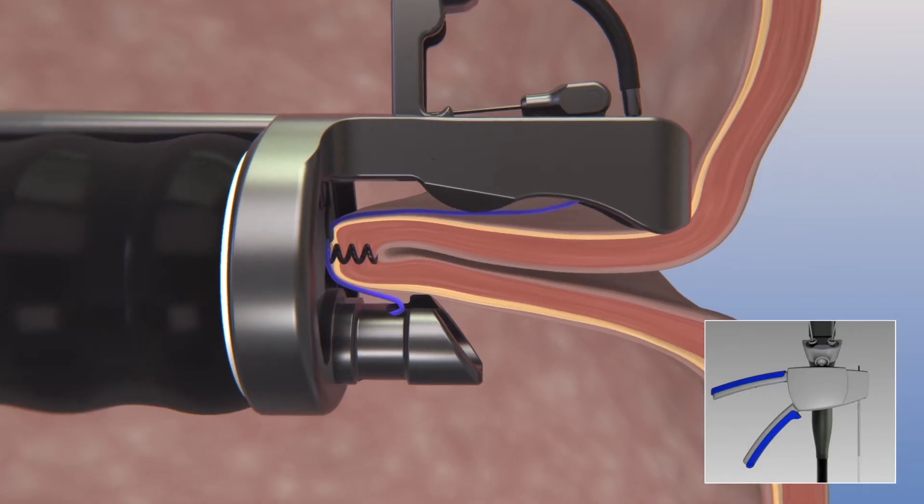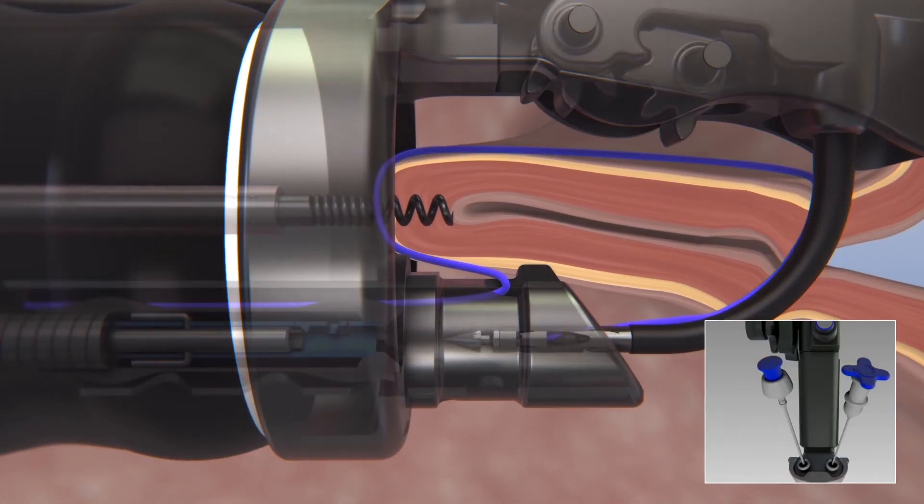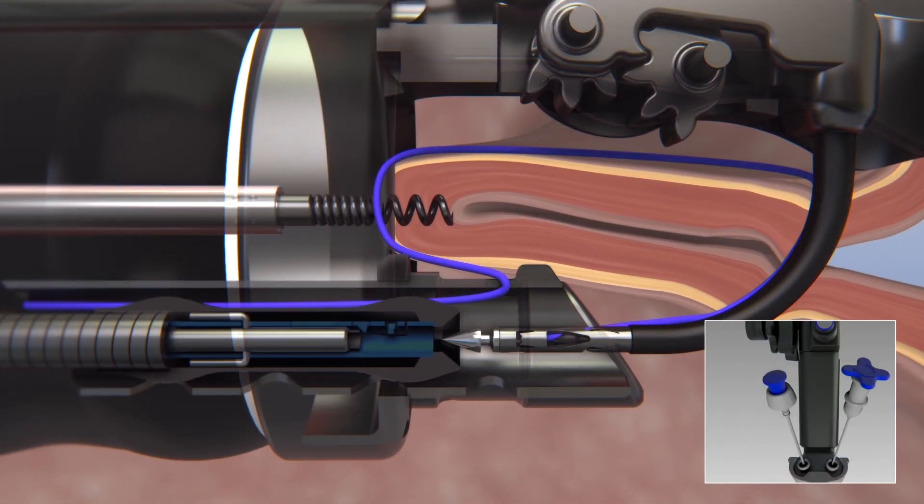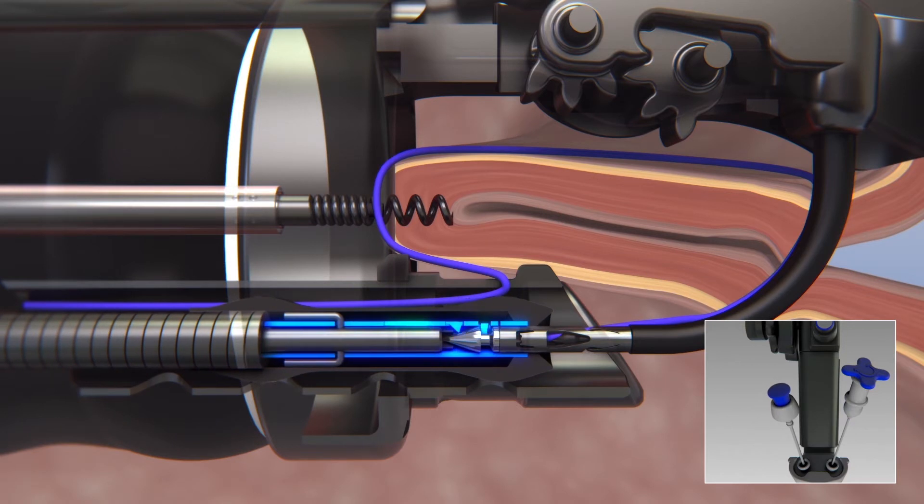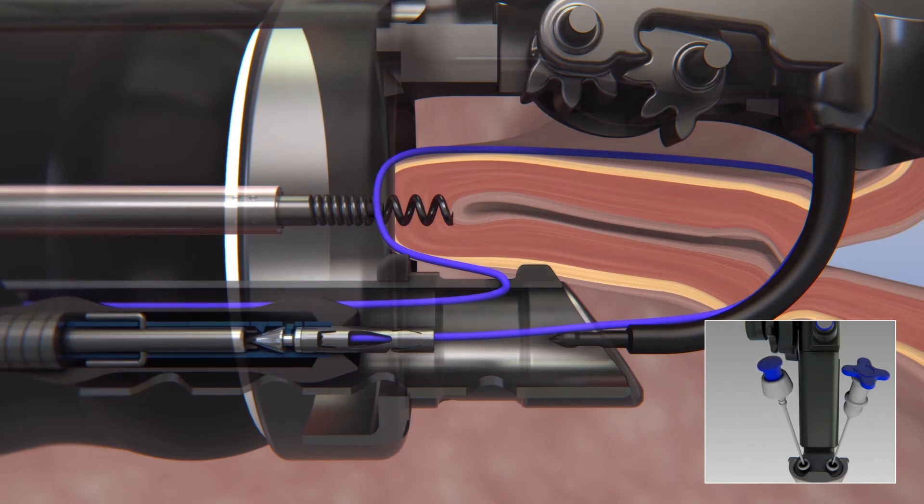Close the overstitch handle to advance the anchor and suture. Advance the anchor exchange over the anchor until the locking mechanism engages. Without pressing the blue button, pull the anchor exchange back to disengage.